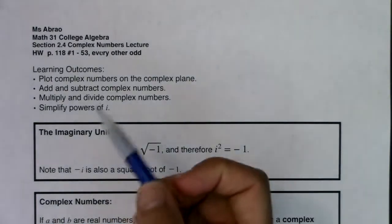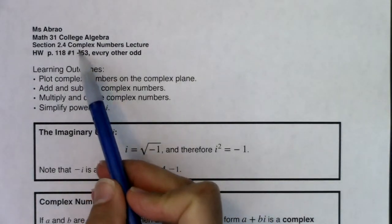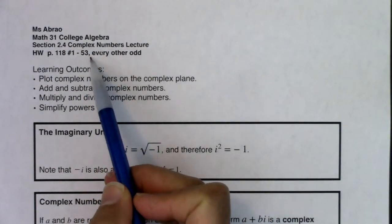Hey, Math 31. Welcome to section 2.4. We're going to review complex numbers in here. Here's your homework: 1 through 53 every other odd.